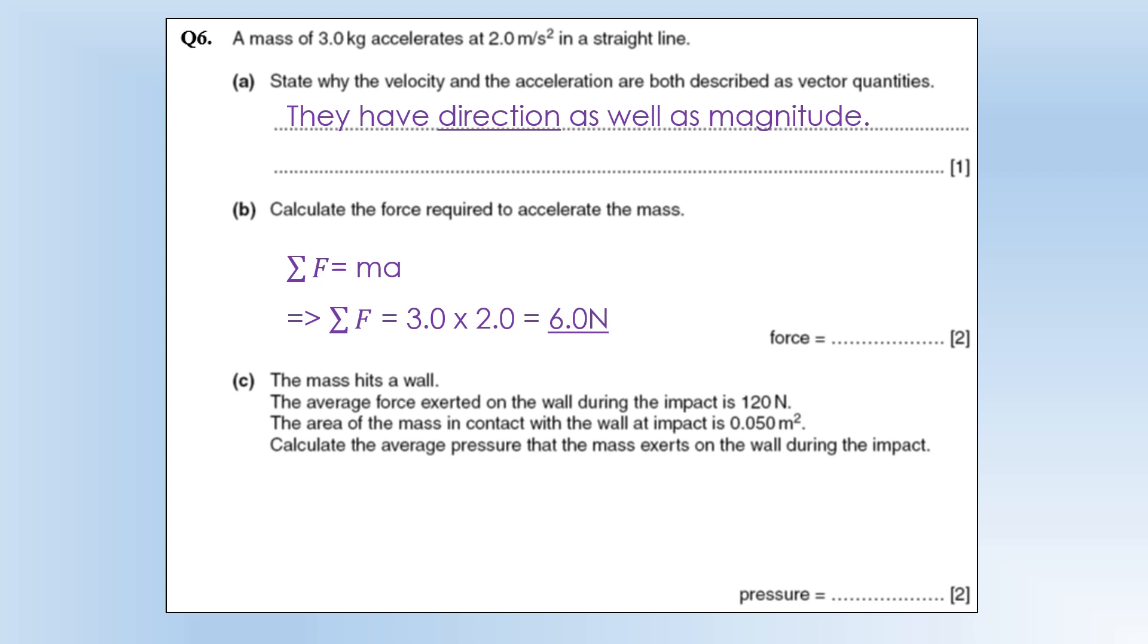The mass hits a wall. The average force exerted on the wall during the impact is 120 newtons. The area of the mass in contact with the wall is 0.050 meter squared. Calculate the average pressure. Well pressure is force divided by area which is going to give us a pressure of 2400 pascals.